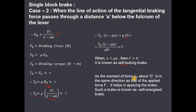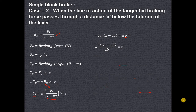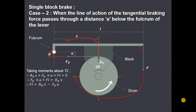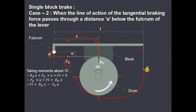When this condition is satisfied, such a brake is known as the self-locking brake. Now regarding the moment of tangential braking force FB — we have seen that this FB creates a moment in the same direction as the applied force F. So it helps in applying the brake; such a brake is known as the self-energized brake. The braking force FB is producing a clockwise moment and F is also producing a clockwise moment about point O, so the tangential braking force helps F to apply the brake on the rotating drum — this is the self-energizing brake.